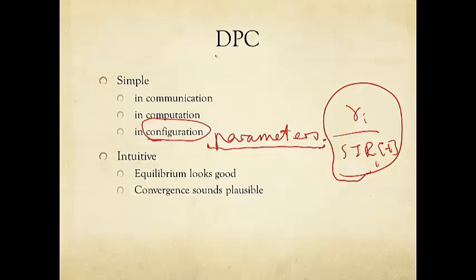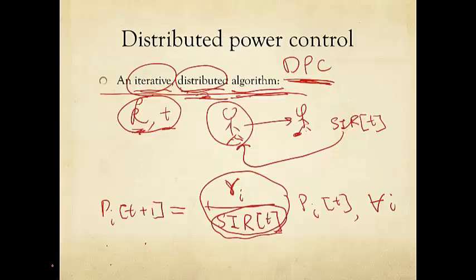But this DPC is very simple in communication, in computation, in configuration. But is it trying to do the right thing? Well, intuitively it is. We're going to look at both the equilibrium behavior and the convergence behavior intuitively. Equilibrium looks actually very good. What is the equilibrium here? Equilibrium means, in this case, we're going to look at at least two more definitions of equilibrium. But in this case, it just means that nobody changes from one time to another anymore.